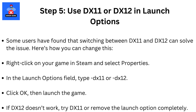Step 5: Use DX11 or DX12 in launch options. Some users have found that switching between DX11 and DX12 can solve the issue. Right-click on your game in Steam and select Properties. In the launch options field, type -DX11 or -DX12, then click OK and launch the game. If DX12 doesn't work, try DX11 or remove the launch option completely.